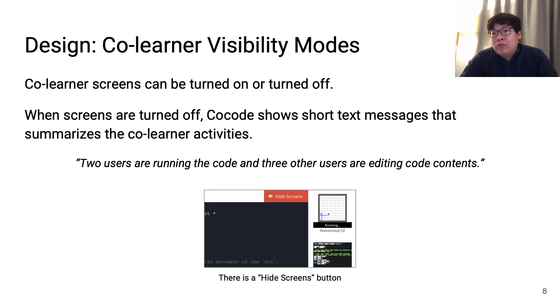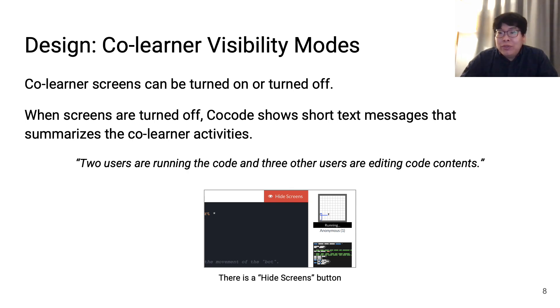For learners who do not want to be distracted by the screens at all, the co-learner screens can be turned on or turned off. When screens are turned off, CoreCode merely shows short text messages that summarize the co-learner activities to the user.